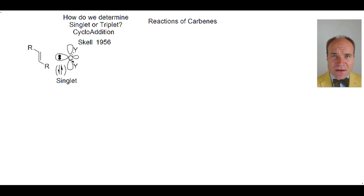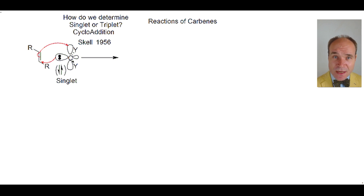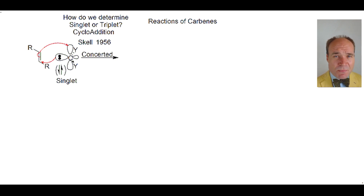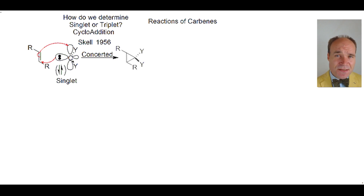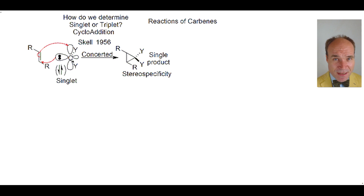With a singlet carbene, the lone pair of electrons in the sp2 orbital attacks the alkene, and the alkene's pi bond attacks the empty p orbital of the carbene, both at the same time, thus in a concerted manner. Because both bonds are formed at the same time, the sense of stereochemistry of the alkene is retained with the stereospecific formation of a single product cyclopropane.